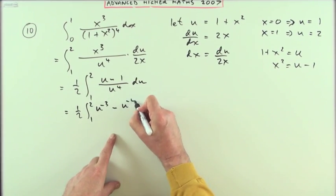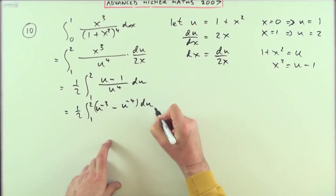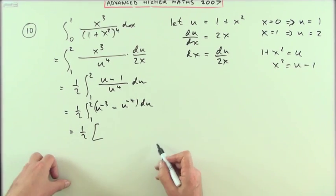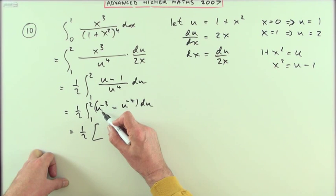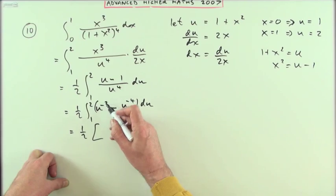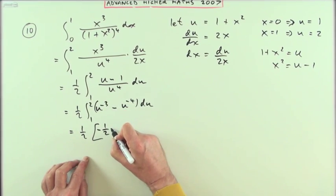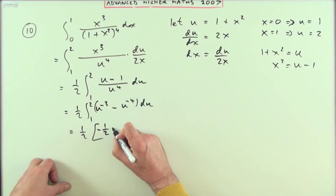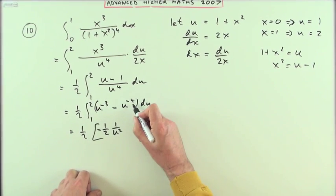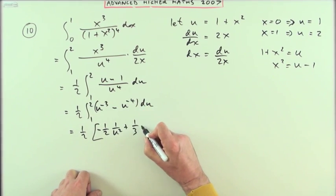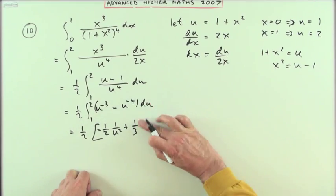And then carry out the integration, so that means it's going to be add 1 to the power, divide by the new power. So adding 1 to the power is going to be negative 2, so dividing by negative 2 means I've got negative a half u to the negative 2. Add 1 to the power negative 3, dividing by negative 3 will make it plus a third u to the negative 3.